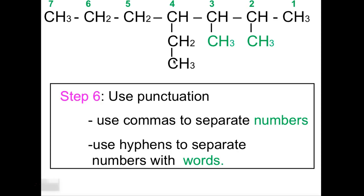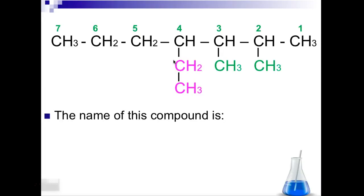So step six, use punctuation. Use commas to separate numbers and use hyphens to separate numbers with words. So the name of this compound finally is going to be 2,3-dimethyl-4-ethyl-heptane. So 2,3-dimethyl, because on the second and the third carbon, there's a methyl group. So there's two of them, so that's why it's dimethyl. 4-ethyl, and then heptane, because that's the longest parent chain.